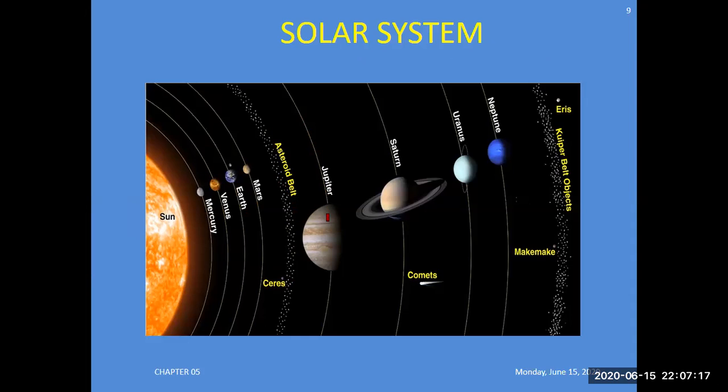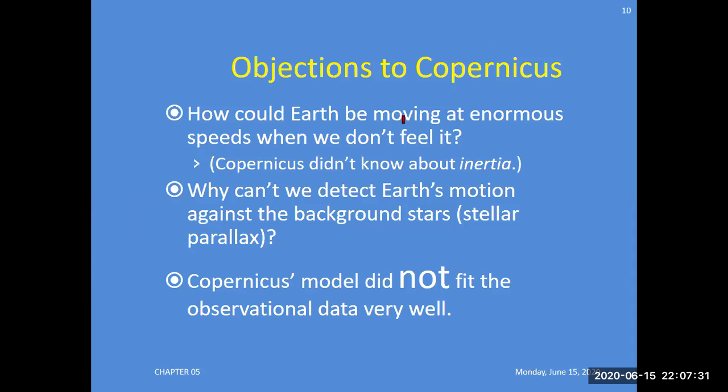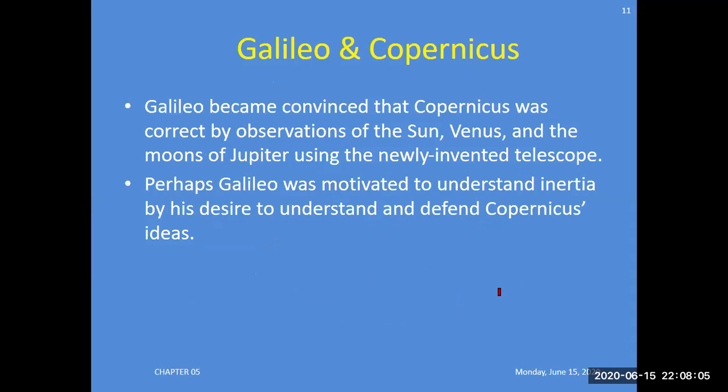Objections to Copernicus: How could Earth be moving at enormous speed when we don't feel it? Why can't we detect Earth's motion against the background stars, stellar parallax? The model did not fit the observations data very well. This was the reason why Galileo and Copernicus were correct by observations of the Sun, Venus, and moons of Jupiter using the newly invented telescope.